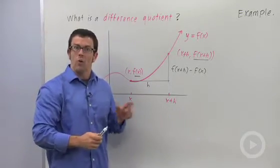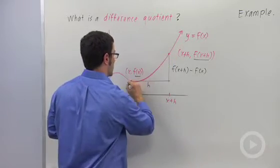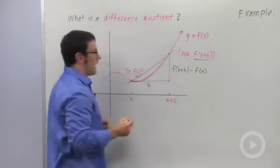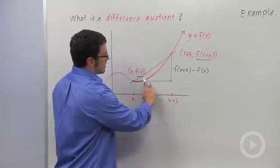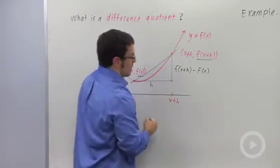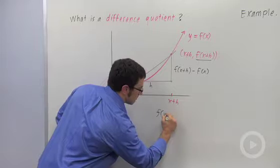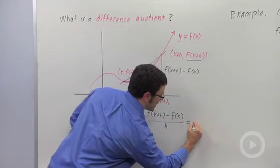It's literally rise over run. It's the slope of the line that connects these two points. And that's a secant line. So what the difference quotient actually represents is the slope of a secant line. So f of x plus h minus f of x over h is slope.